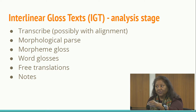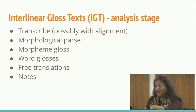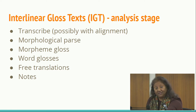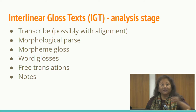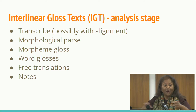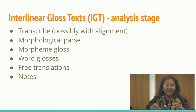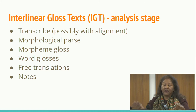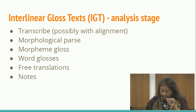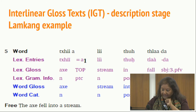These software packages don't help us save, I would say, 50% of the decision making that we're doing — like what are the constituents, where does the noun phrase begin and end, which is the auxiliary. They don't help us save a lot of that because of the way they're made.